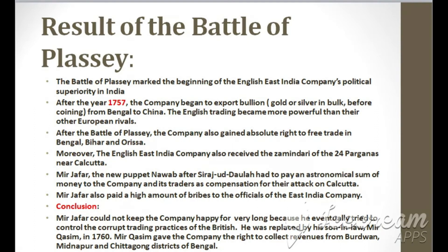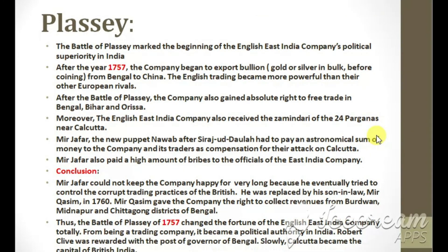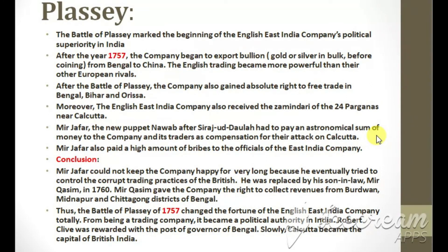Mir Zafar, the new puppet Nawab after Sirajud Daula, had to pay an astronomical sum of money to the company and its traders as compensation for their attack on Calcutta. Mir Zafar also paid a high amount of bribes to the officials of the East India Company. However, Mir Zafar could not keep the company happy for long because he eventually tried to control the corrupt trading practices of the British. He was replaced by his son-in-law Mir Kassim in 1760. Mir Kassim gave the company the right to collect revenues from Berdwan, Midnapur and Chittagong districts of Bengal. Thus, the Battle of Plassey of 1757 changed the fortune of the English East India Company totally — from being a trading company, it became a political authority in India. Robert Clive was rewarded with the post of Governor of Bengal, and slowly Calcutta became the capital of British India.